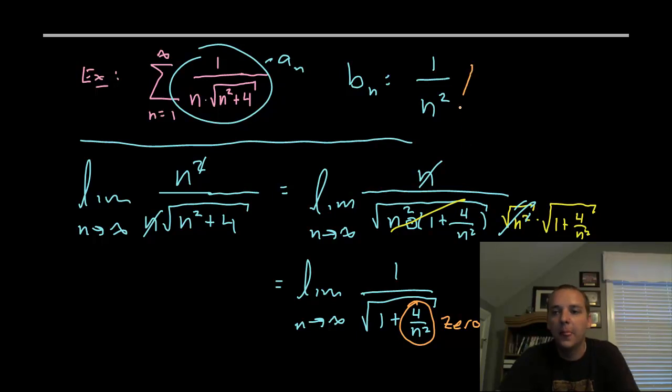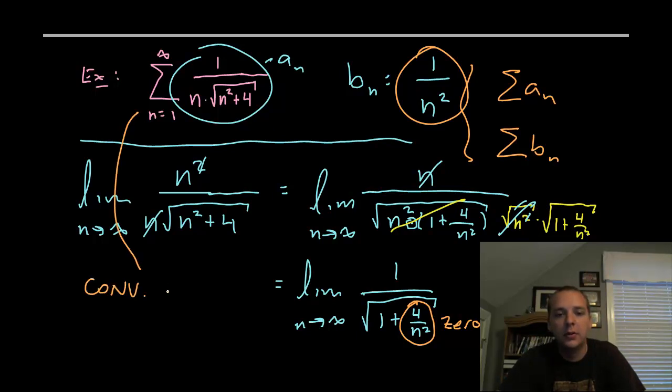And this means that the sum of the a sub n terms and the sum of the b sub n terms, they either converge together or they diverge together. And again, these converge because that's a p-series. So this one here would converge by the limit comparison test and p-series test.